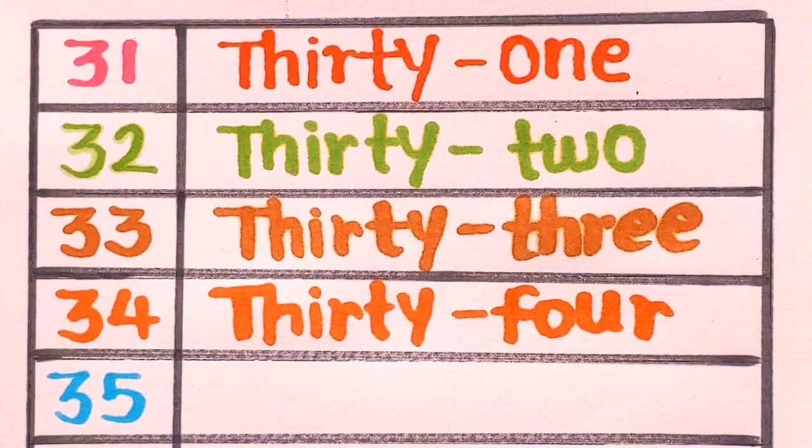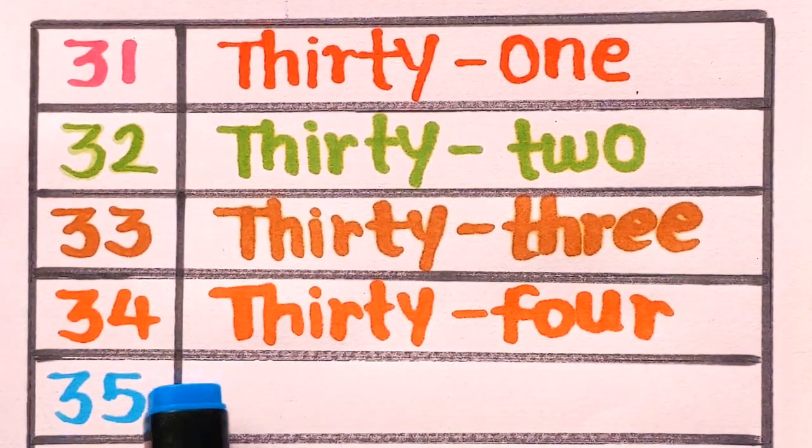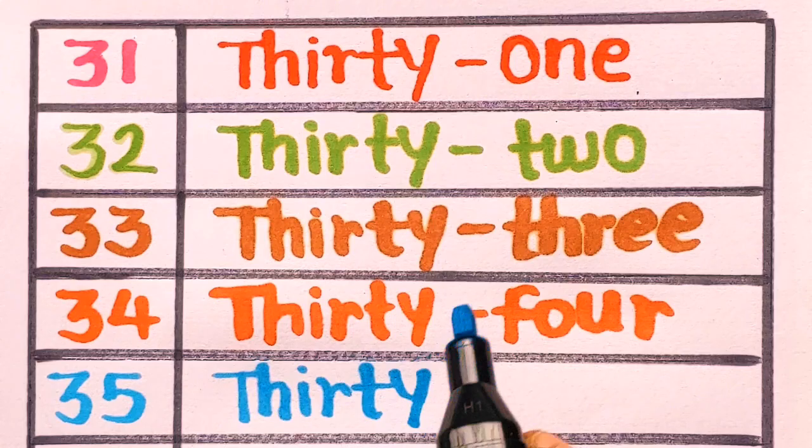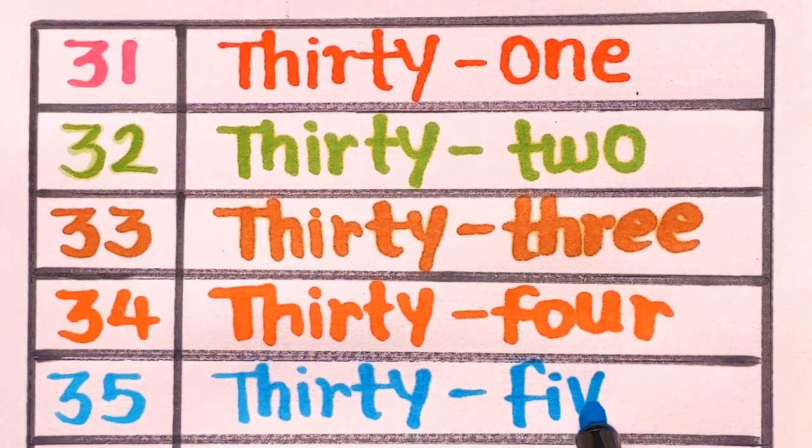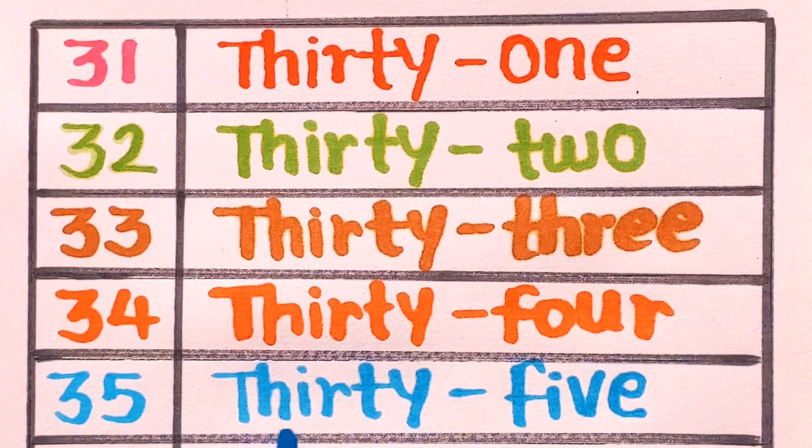Next is 35. T-H-I-R-T-Y, thirty. F-I-V-E, five. 35, thirty-five with a sky blue color.